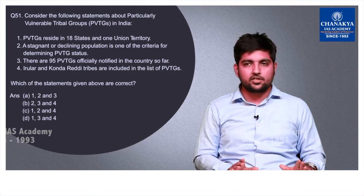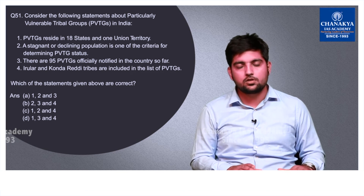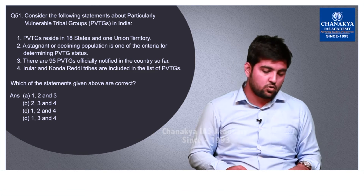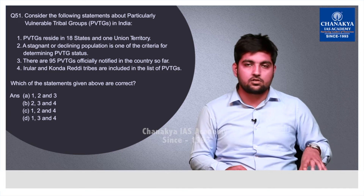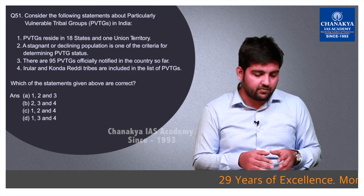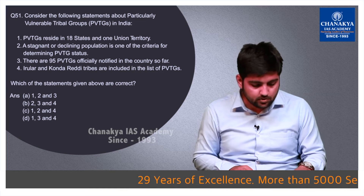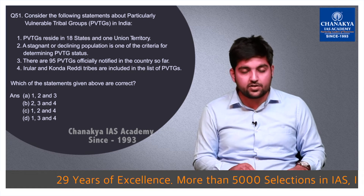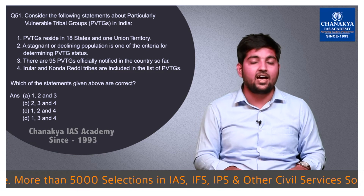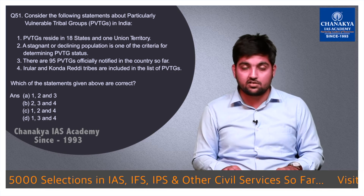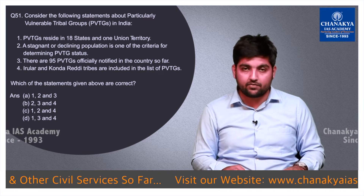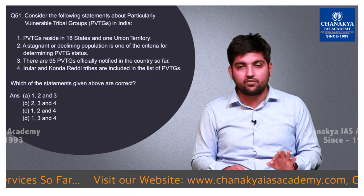Question number 51 is related to Particularly Vulnerable Tribal Groups (PVTGs) — a segment of tribals in India who are very vulnerable and some even on the verge of extinction. There are four statements and we must find the correct ones. Statement 3 — that there are 95 PVTGs officially notified in the country — is absolutely wrong; officially only 75 tribes are registered under PVTGs. Eliminating statement 3, we are left with option C — statements 1, 2 and 4 are correct.